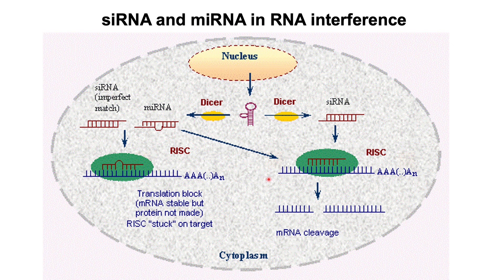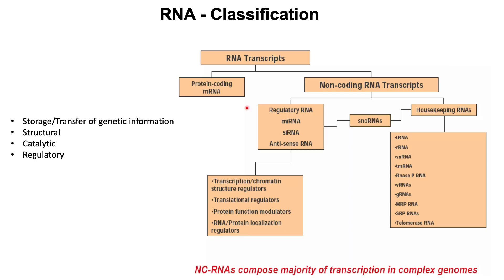In the given options, miRNA and siRNA are functionally similar, involved in RNA interference, and hence are ruled out. RNAs can be classified into several types based on structure and function, playing roles in storage or transfer of genetic information, structural maintenance, catalysis, and regulation. Only less than three percent — the mRNAs — make proteins, while the rest of the non-coding RNAs are involved in regulation.